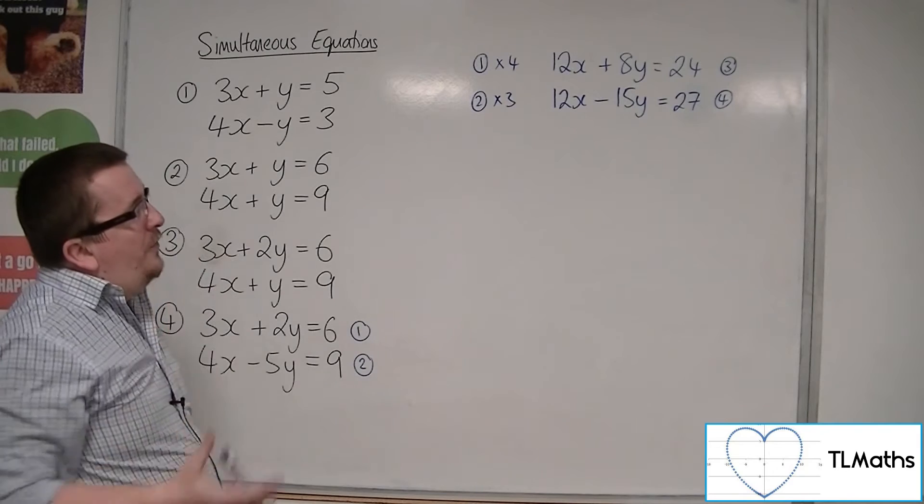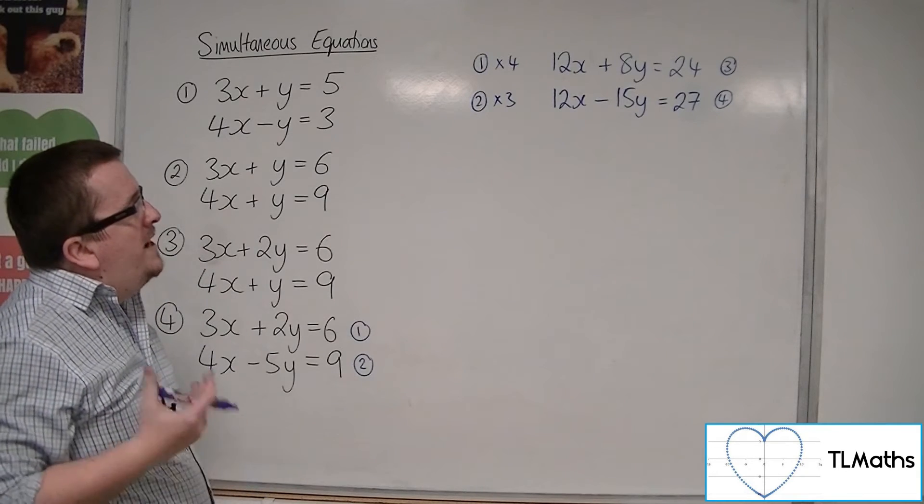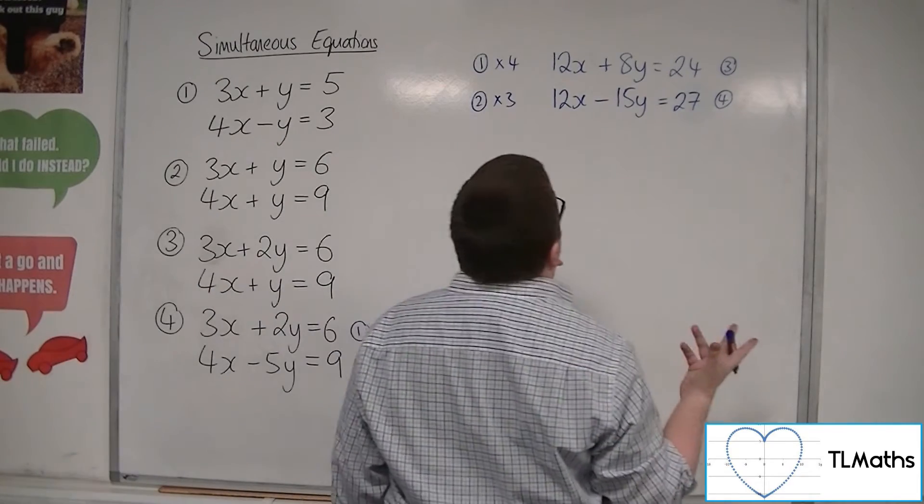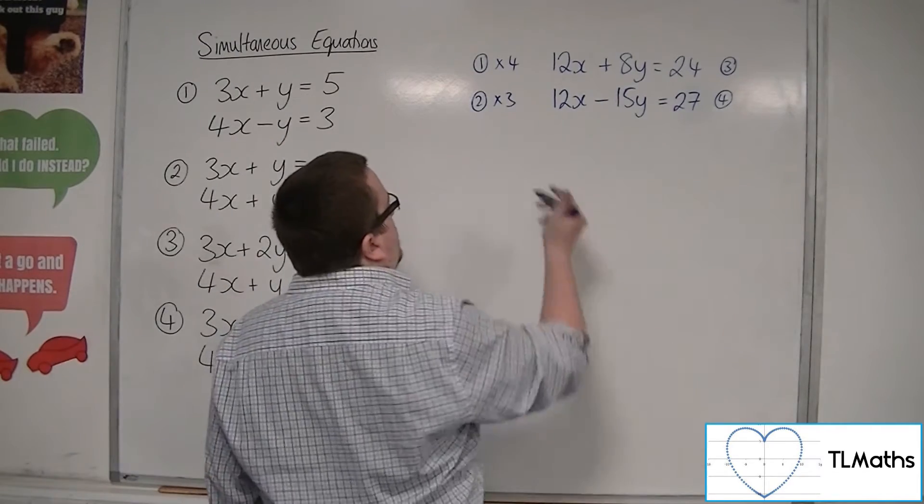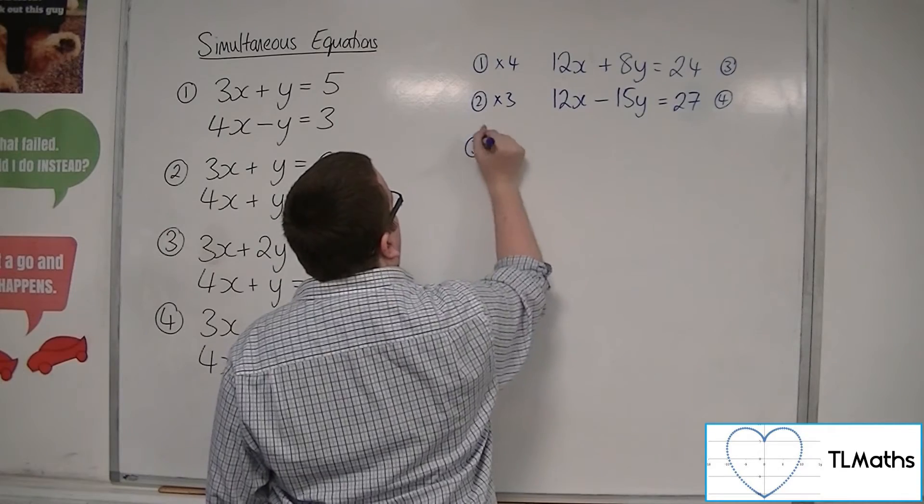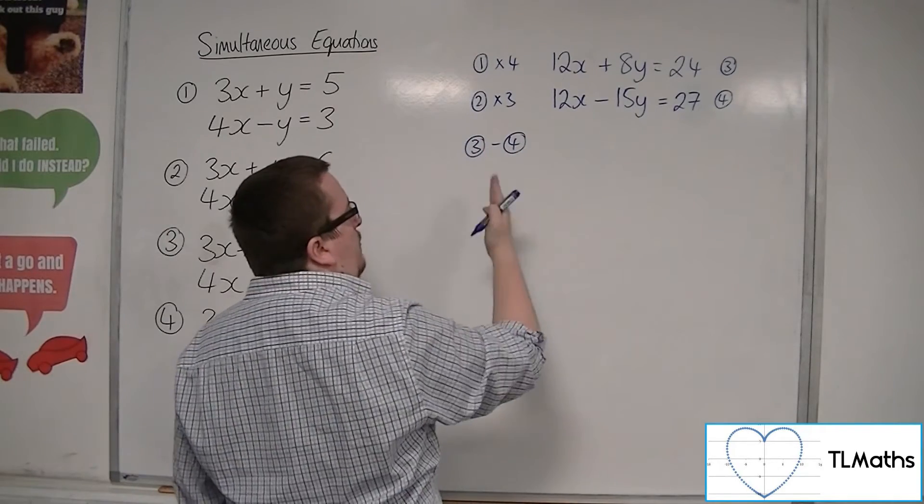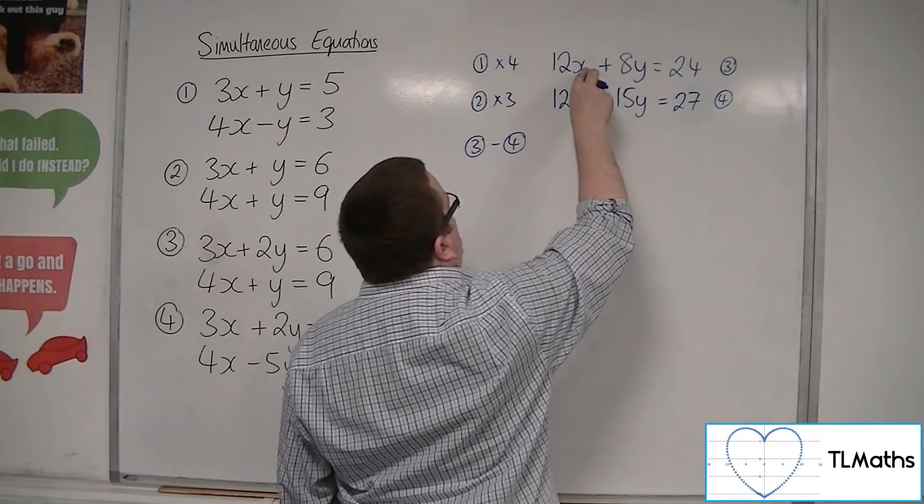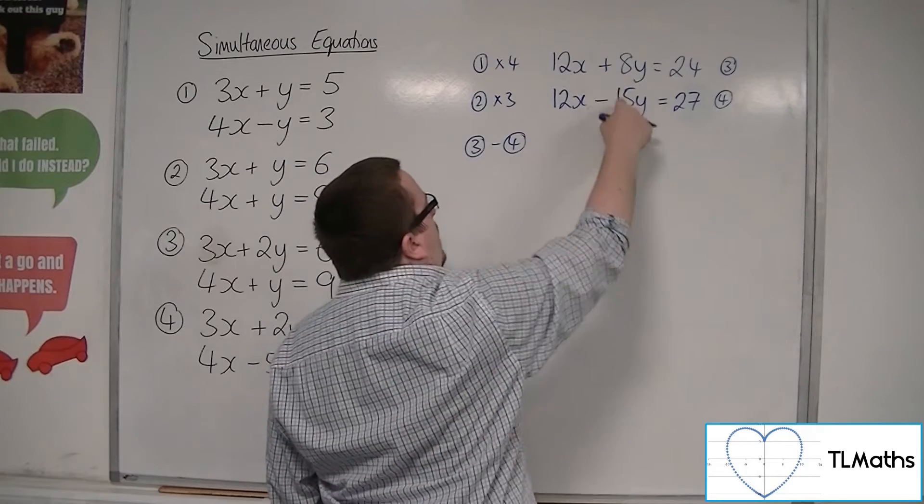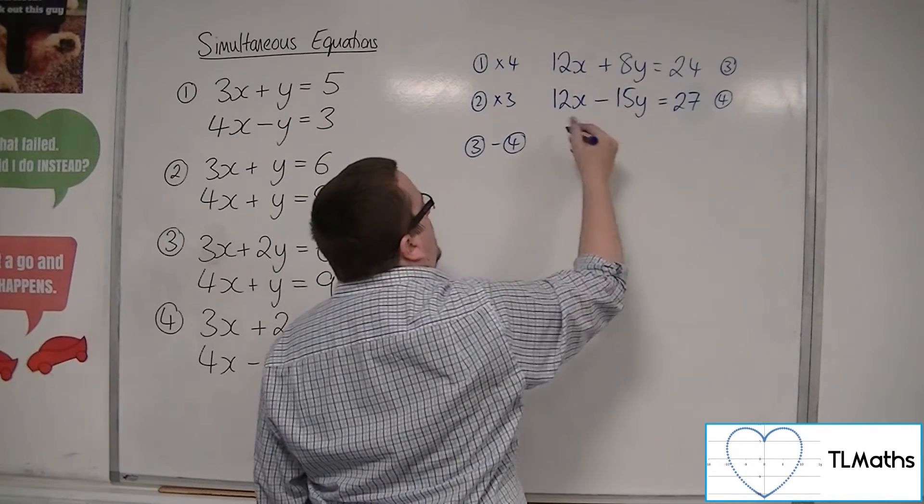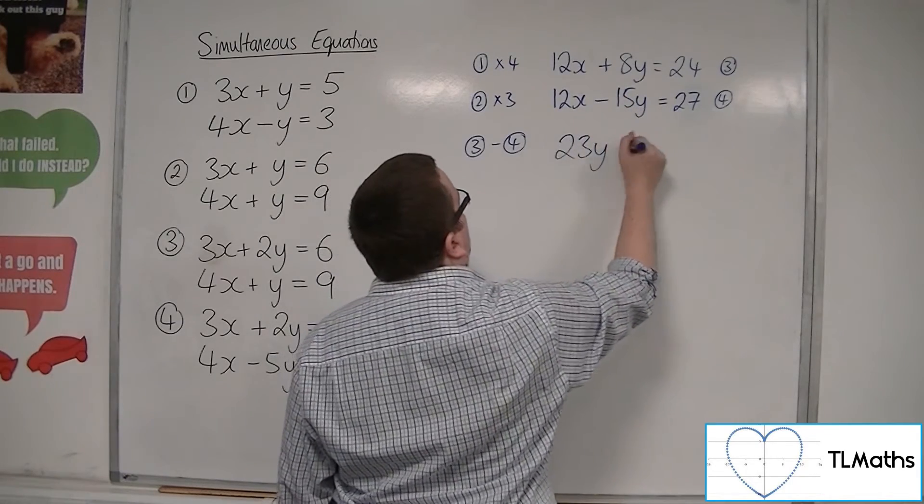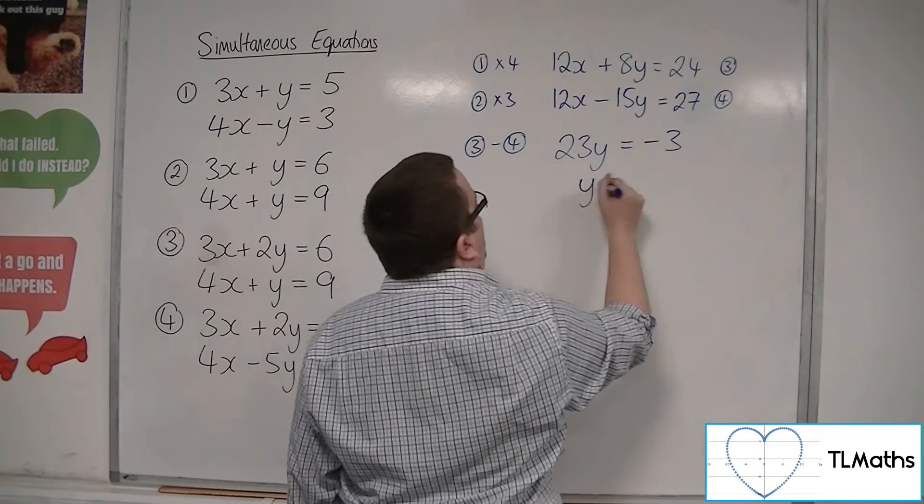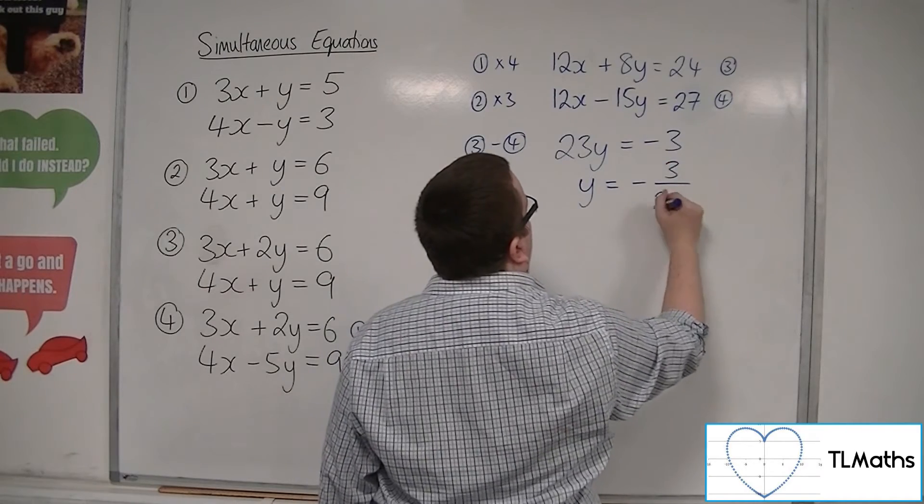So at this point, really your choice about whether you do 3 take away 4 or 4 take away 3. I'd probably go with 3 take away 4, so that I maintain a positive y. The 12x's will cancel. 8y take away minus 15y will be 23y. And 24 take away 27 is minus 3. So y is minus 3 over 23.